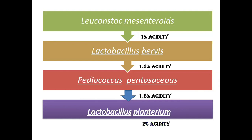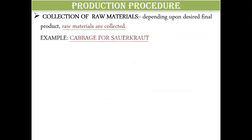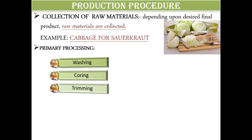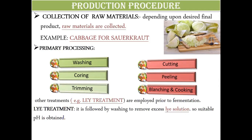Now let's look at the production process of these fermented products. First, raw materials are collected depending on the desired final product — for example, cabbage is the main raw material for sauerkraut. After collection, the raw material goes through primary processing: washing, coring, trimming, cutting, peeling, blanching, and cooking. Coring means removing the hard core from vegetables or any seeds present.